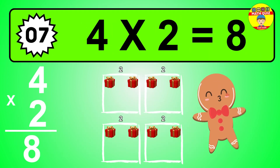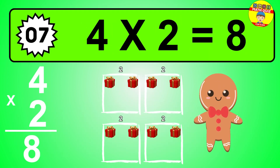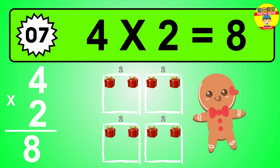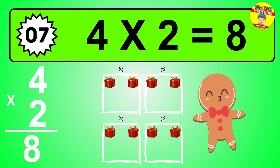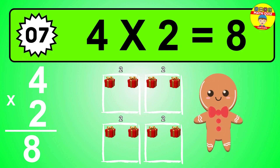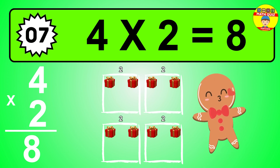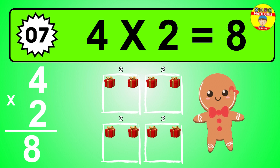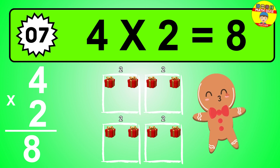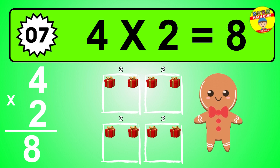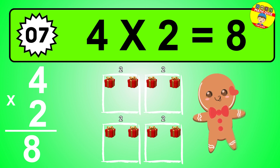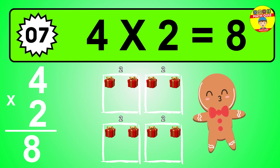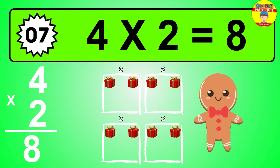The answer is four times two is eight. To calculate, we have four groups with two balls each one. So how many balls do we have? Eight balls.